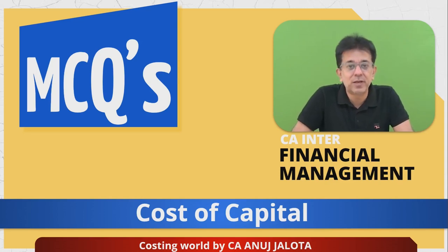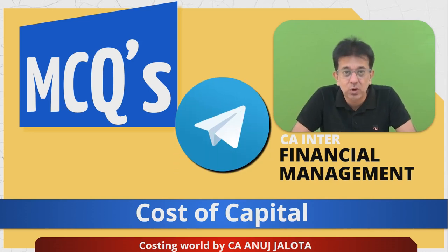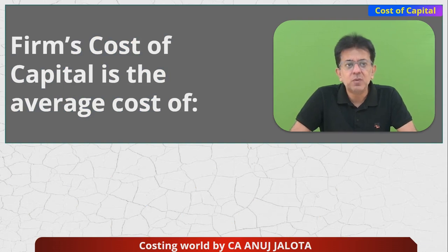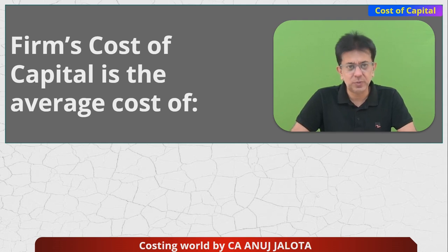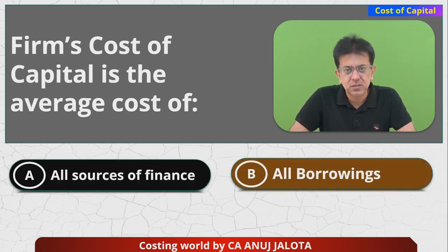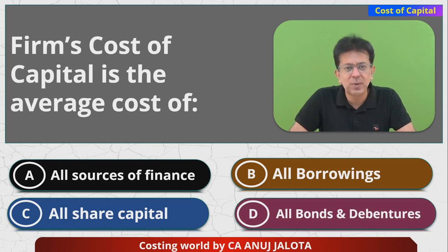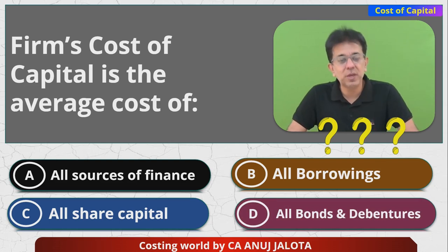Hi guys, welcome to CA Inter Financial Management MCQs. We are doing a chapter on Cost of Capital. Please join our Telegram channel for all updates for Costing, FM, and CA Final SCMP. So the question is: firm's cost of capital is the average cost of — A) all sources of finance, B) all the borrowings that is debt, C) all share capital, and D) all bonds and debentures. This should be an easy one if you have covered the first lecture of Cost of Capital.